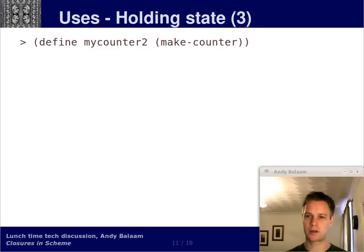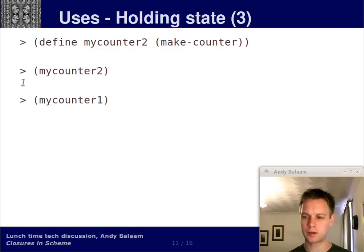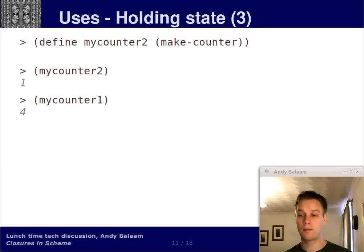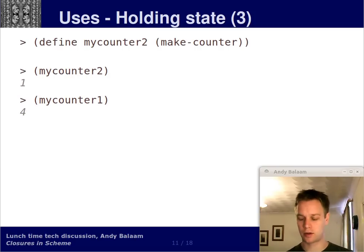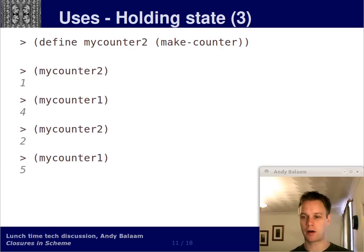So let's define another symbol which is the result of calling makeCounter again. When we run mycounter2 as a procedure, the answer is 1 — same as when we started with mycounter1. The question may be: what happened to mycounter1? The answer is it's independent. Every time you call makeCounter and return a procedure from it, that procedure gets its own closure. mycounter2 and mycounter1 are quite happily holding onto different values of the symbol value. They each have their own closure — because when you call makeCounter again, you've got another closure.